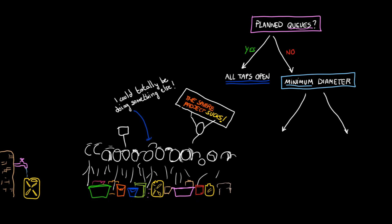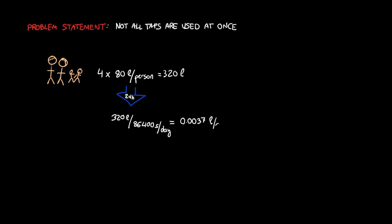This requires a little explanation. Take a family of four with 80 liters per person. Their average flow is 0.0037 liters per second, and that would lead to a tiny pipe. But the taps are not on all the time. When they're used, they're using full 0.2 liters per second.